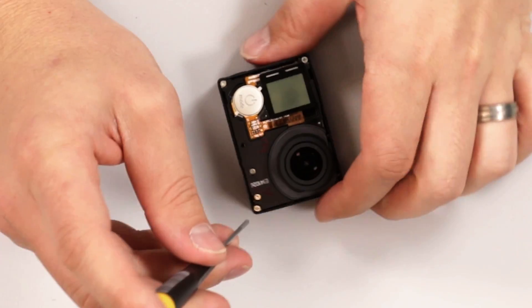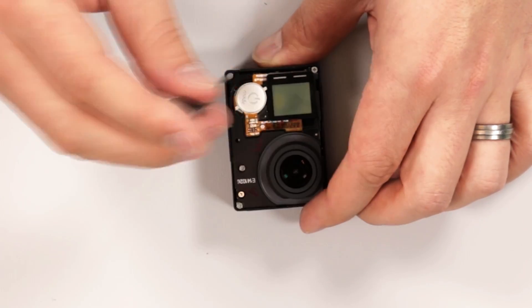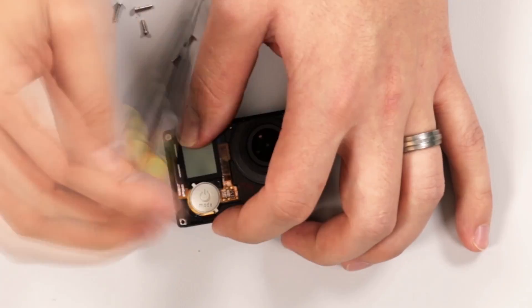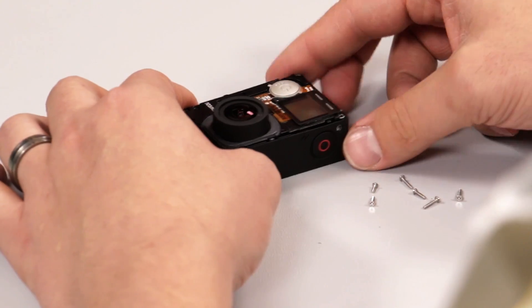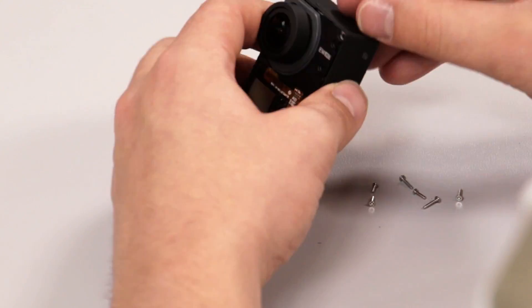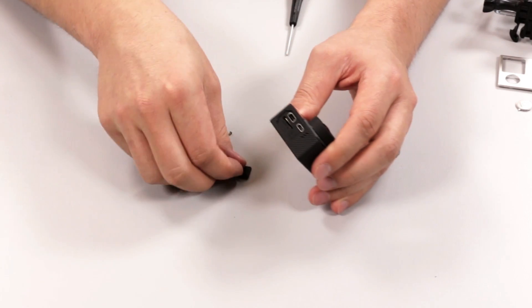Pick the power button off, and then remove the now exposed screws. Remove the side door and the battery.